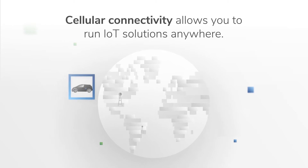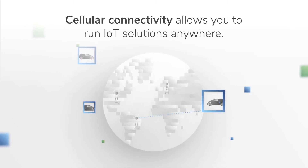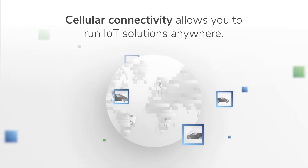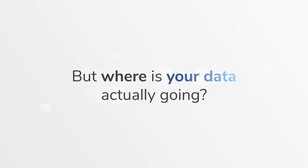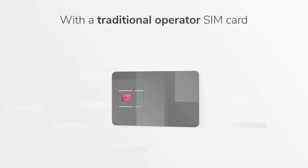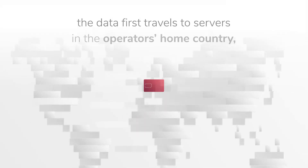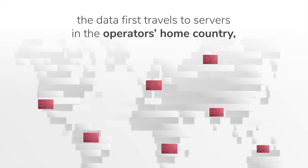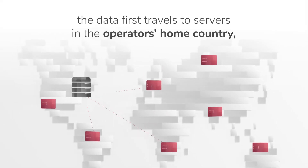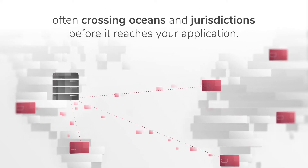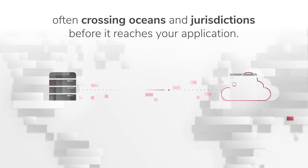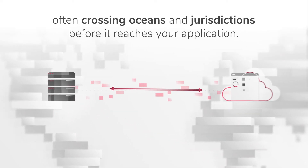Cellular connectivity allows you to run IoT solutions anywhere. But where is your data actually going? With a traditional operator SIM card, the data first travels to servers in the operator's home country, often crossing oceans and jurisdictions before it reaches your application.